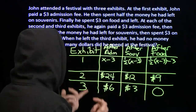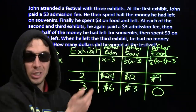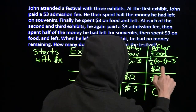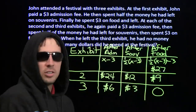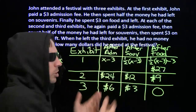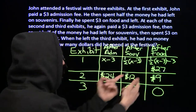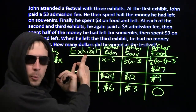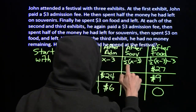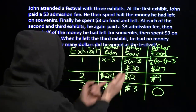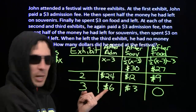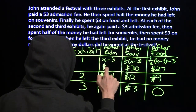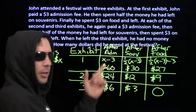One more step backwards: he had twenty-four after admissions, spent three dollars on admissions, so we know he had twenty-seven before admissions. He had twenty-seven dollars after spending three dollars on the food in exhibit one — that means he had thirty dollars before buying the food. He had thirty dollars after spending half his money on souvenirs, which means he had sixty dollars before spending half the money on souvenirs.